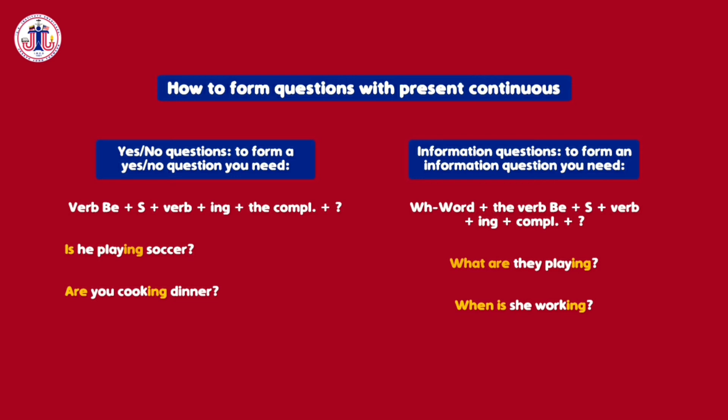To form an information question, you need a WH word — for example 'what', 'where', 'when' — plus the verb 'be' plus subject plus the verb plus -ing plus the complement. For example: 'What are they playing?' or 'When is she working?'